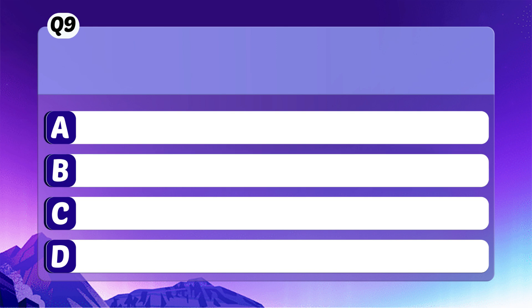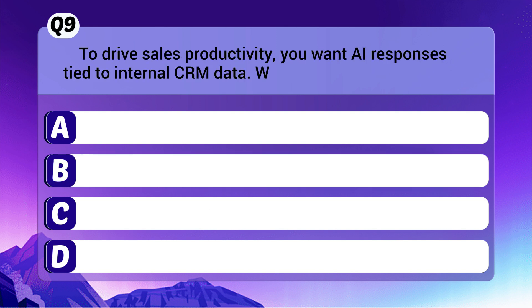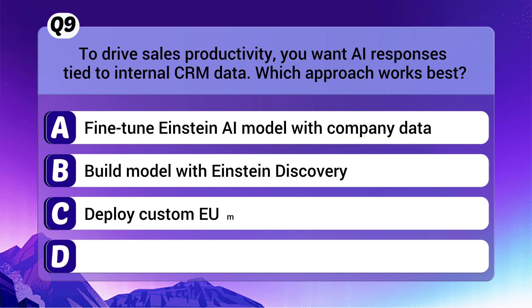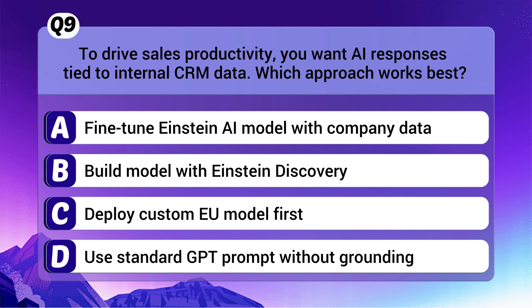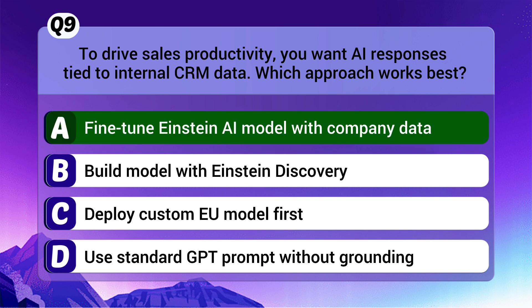Question 9: To drive sales productivity, you want AI responses tied to internal CRM data — which approach works best? The correct answer is A: Fine-tune the Einstein AI model with company data.